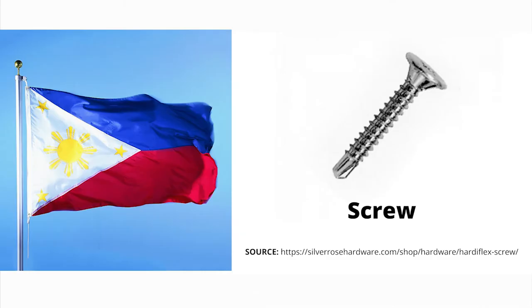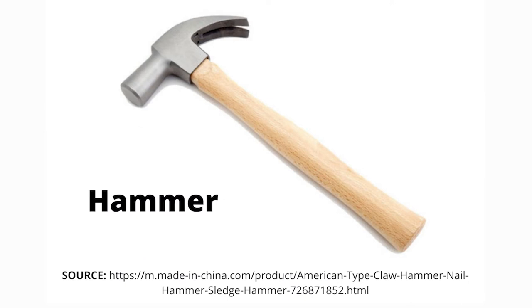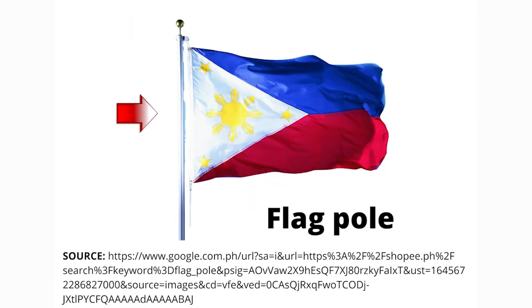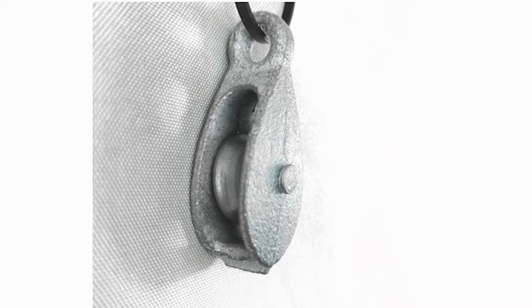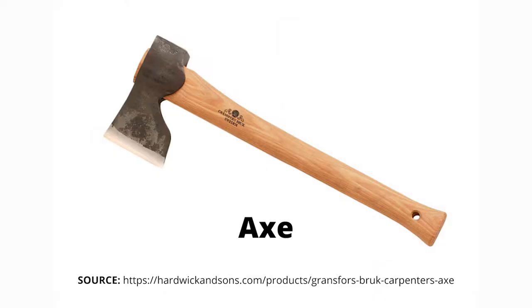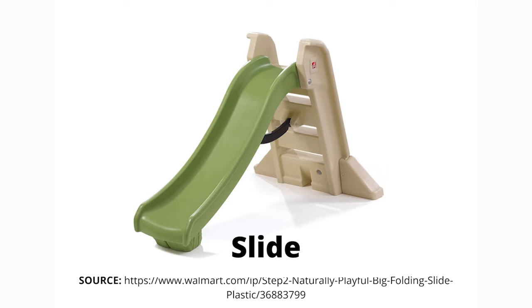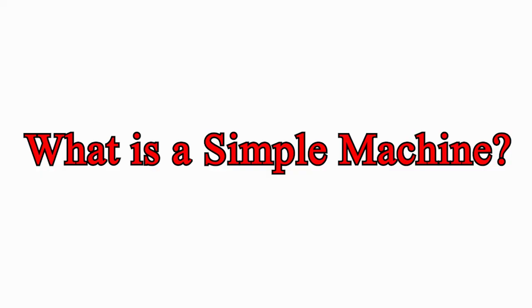Good job, kids, in answering our exercises. Please look at these pictures again. These pictures have something to do with our lesson. The hammer is an example of a lever. Lever is a simple machine. Screw is a simple machine. A flag pole has a pulley on its tip. Pulley is a simple machine. An axe has a wedge in its blade. Wedge is a simple machine. The bicycle's crank or sprocket is an example of a simple machine. Even the slide, which is an inclined plane, is a simple machine. Therefore, what is a simple machine?